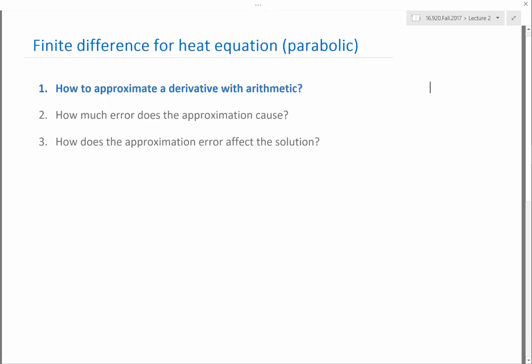The set of questions we are trying to answer in the finite difference discussion is no different from the questions you need to answer if you use any numerical methods for solving differential equations or something else. The first question is: how do we approximate a derivative, or anything that you can't do exactly with arithmetic? How do I approximate a derivative or second order derivative with arithmetic, given the limited information I have about the function, depending on if it's finite difference or finite volume? Two: I made an approximation — how much error does the approximation cause? We need to understand and know that.